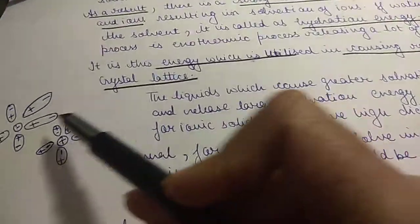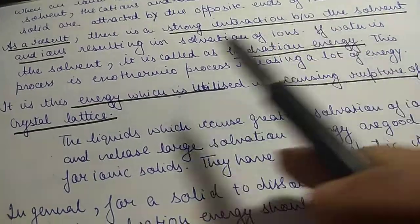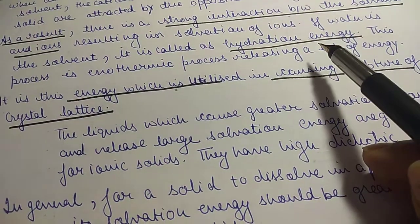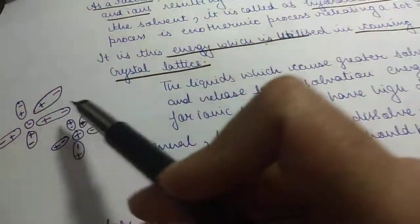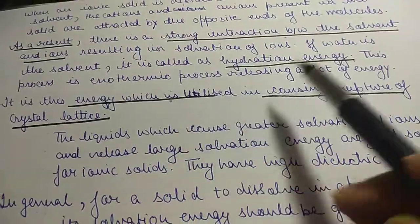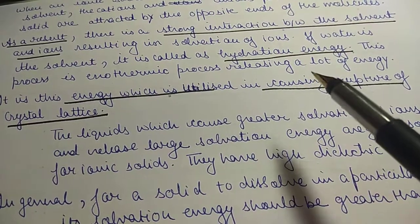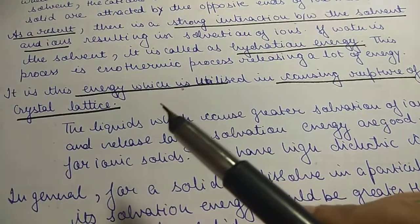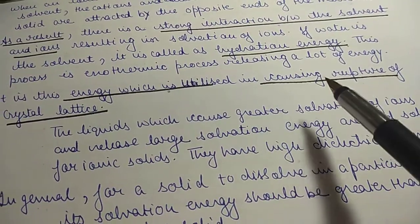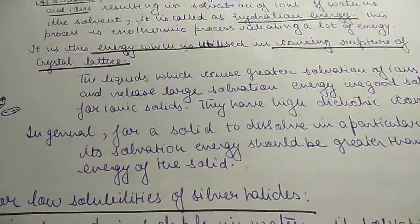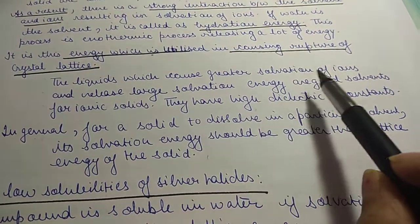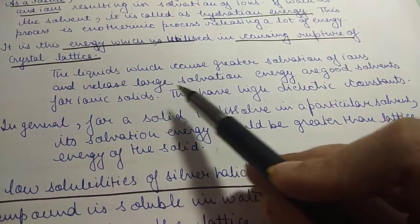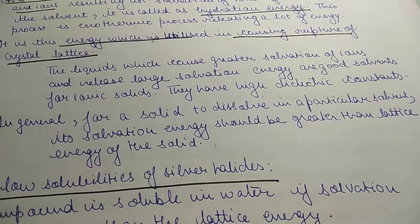A lot of energy is released in this process. In the case of water, this energy is called hydration energy. This process of forming such a structure is an exothermic process — one in which energy is released. This energy is then utilized to cause rupture of the crystal lattice.